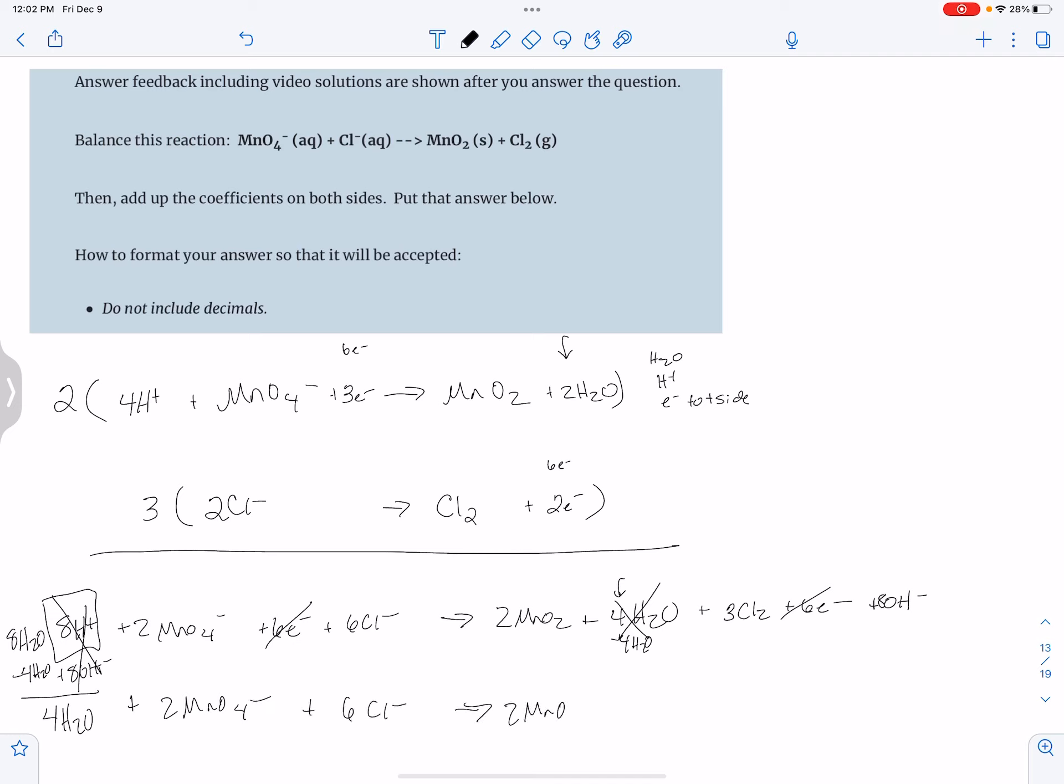Then I'm left with the 2MnO4 minus plus 6Cl minus goes to 2MnO2 plus 3Cl2 plus 8OH minus. Notice that some of these are all about add up the coefficients, put the answer in that way.